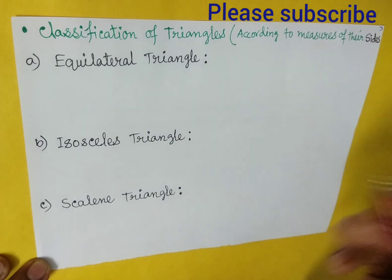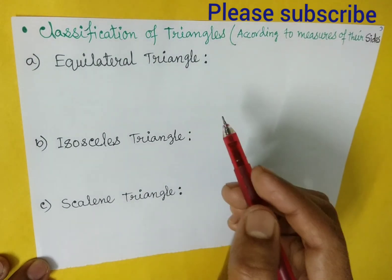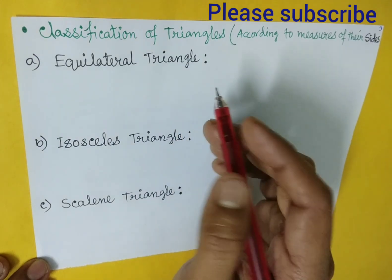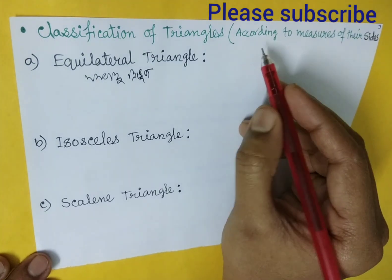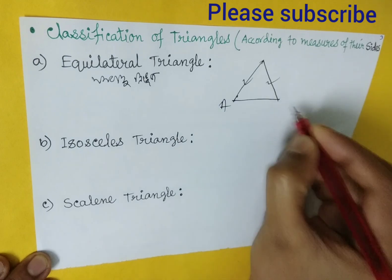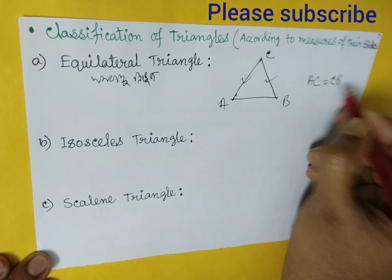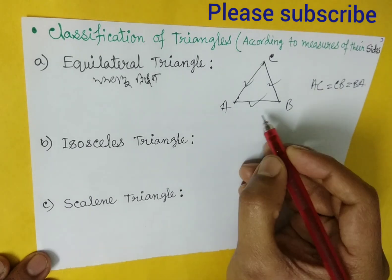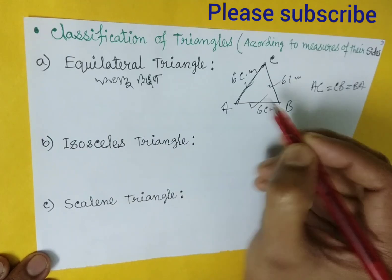Next, according to the measures of their sides, triangles are: equilateral triangle, isosceles triangle, and scalene triangle. What is an equilateral triangle? If the three sides of a triangle are equal in size, then it is called an equilateral triangle. In Bengali, that is called Samu Bahu Tribhuj. All three sides AB, BC, and CA are equal. For example, if AB equals 6 centimeters, then BC also equals 6 centimeters and CA also equals 6 centimeters.